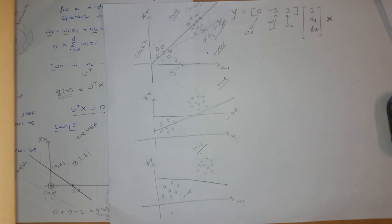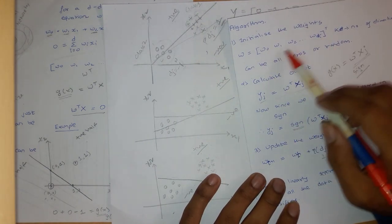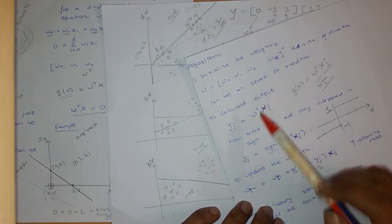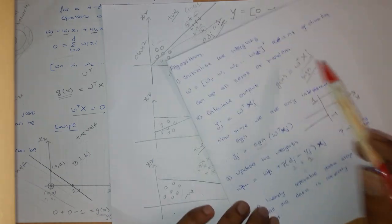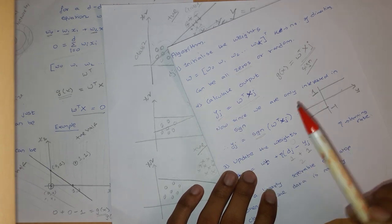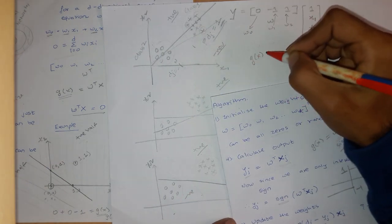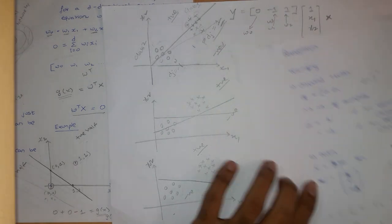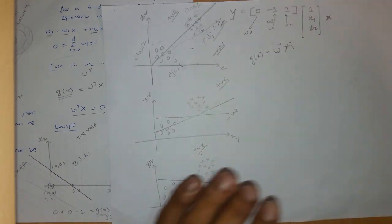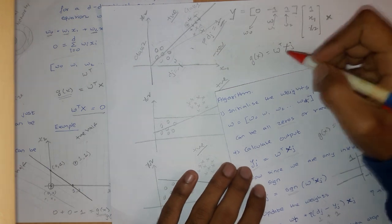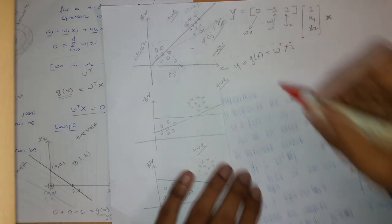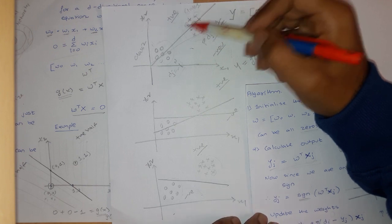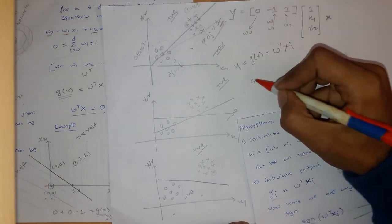Let us formulate this mathematically. We initialize the weights randomly — either all zeros or any random value. Next, we calculate the output: g of xj is equal to omega transpose xj, where xj are all the data points. We then compute yj as the sign of this output, because we only care whether the sample is in the positive half or the negative half.